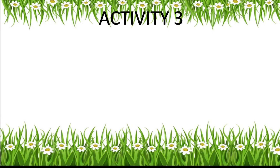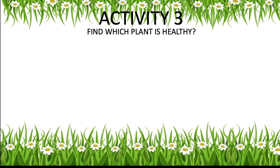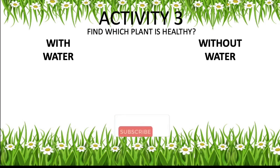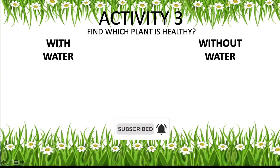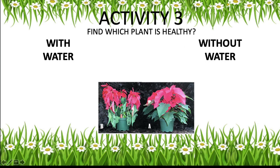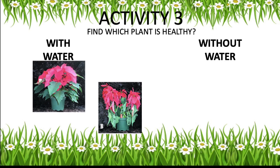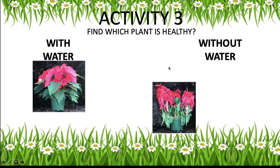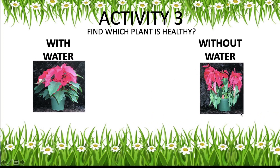Shall we do activity three? Yes. Find which plant is healthy. You need to organize which is with water and which is without water. Is plant A the plant with water, or plant B with water? It is plant A. And which plant is grown without water? It is plant B. This is how it will look if you don't pour regular water.